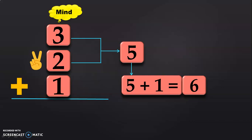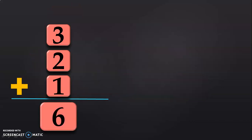I have dealt with the properties of addition in a separate video, the link to which is given below in the description box and also in the iCard section. So, the sum of the three numbers 3 plus 2 plus 1 will give you the answer 6. Let us do the next sum now.